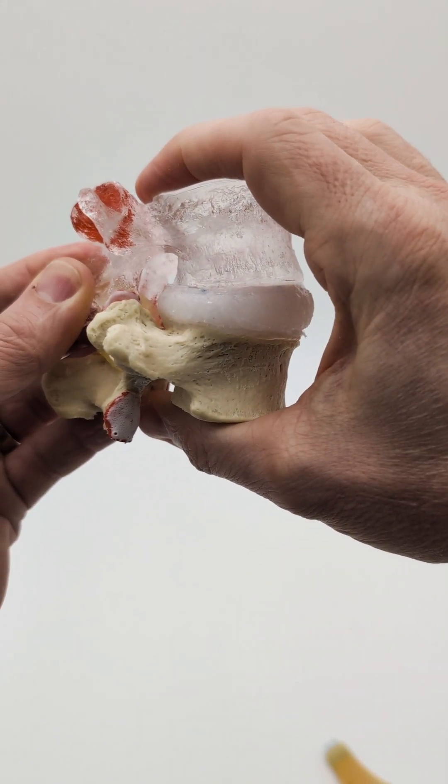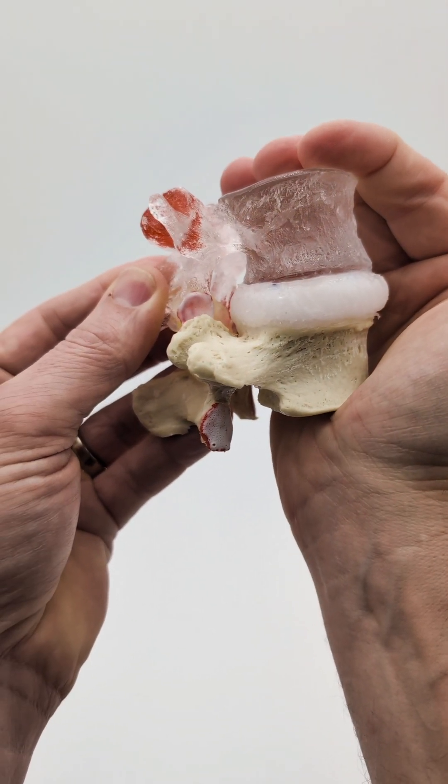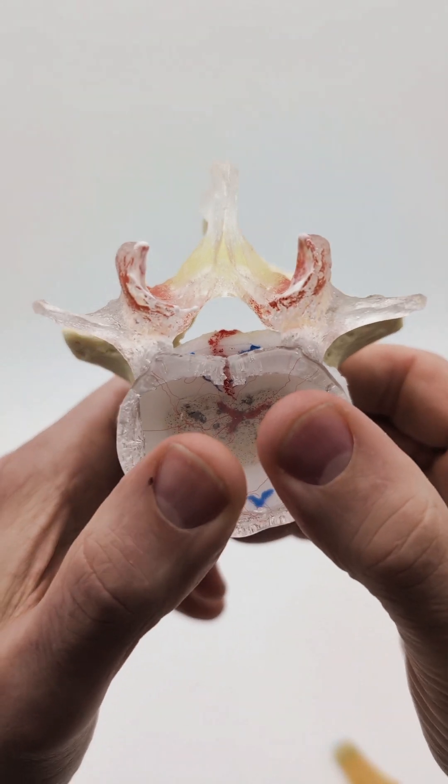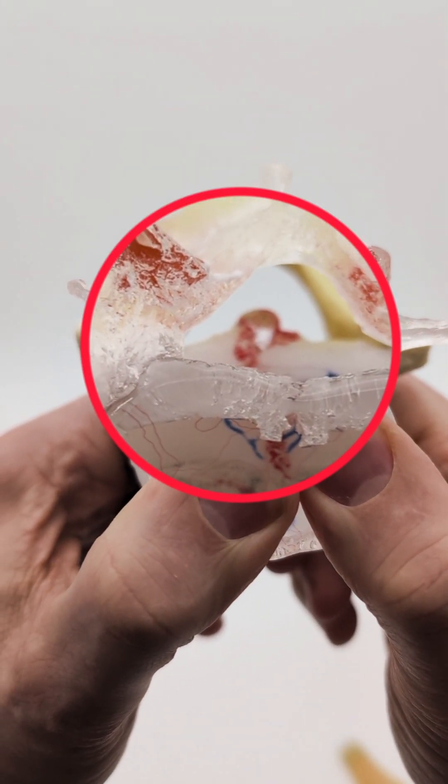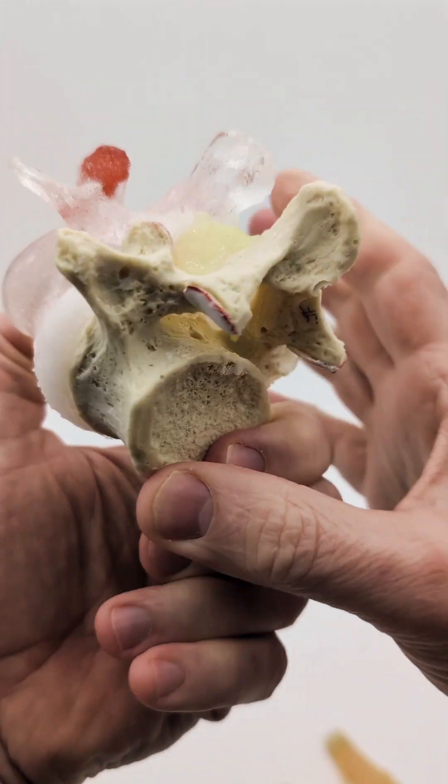The nucleus will drive anteriorly this way, makes sense. But as soon as the end plates become parallel and beyond that, you can see how the nucleus will push posteriorly and extrude through the annular fissure.